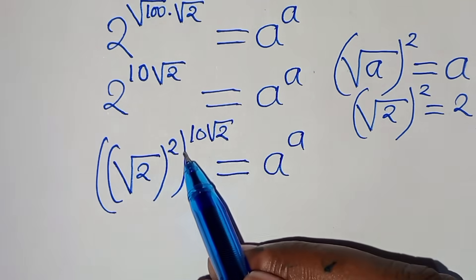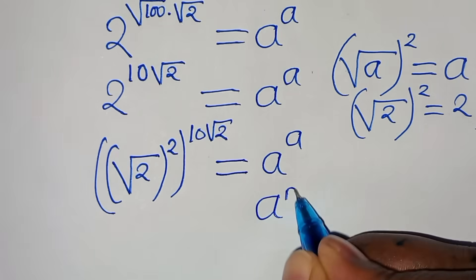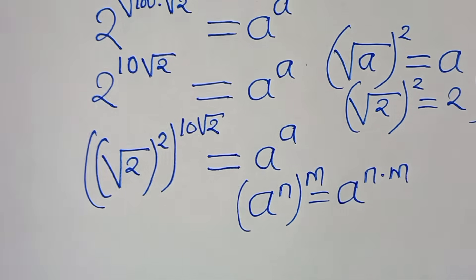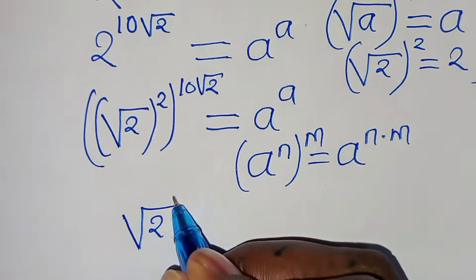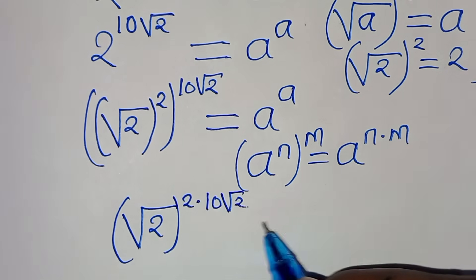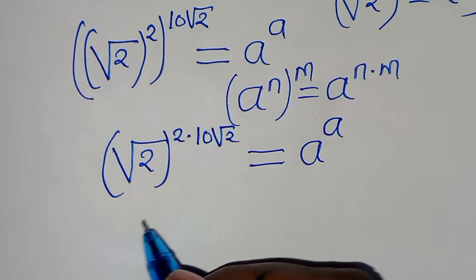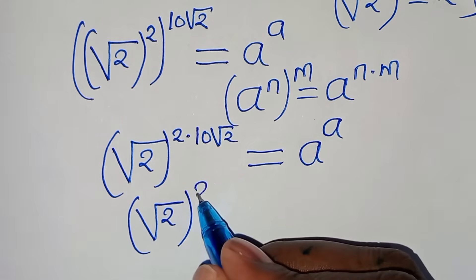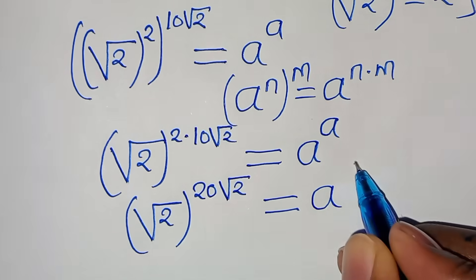This is in the form of a to the power of n raised to the power of m, which we can express as a to the power of n times m. Applying this exponent property, we have square root of 2 raised to the power of 2 times 10 square root of 2, equal to a to the power of a. That gives us square root of 2 raised to the power of 20 square root of 2, equal to a to the power of a.